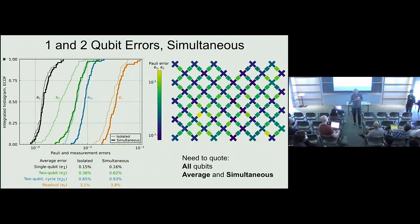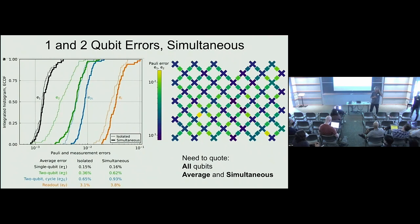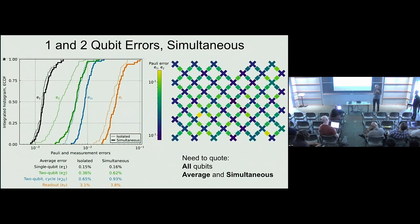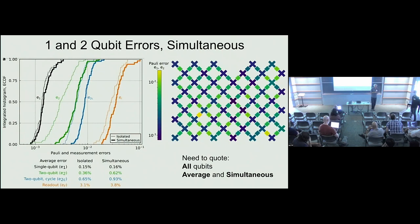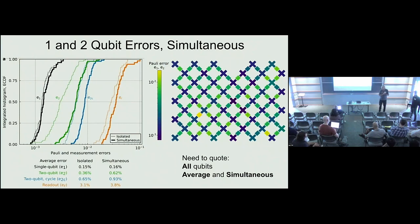Q&A on modular architecture: considering crosstalk between even distant qubits, what would a modular architecture look like for superconducting qubits? The speaker says: crosstalk is a problem across the whole chip, though it's worse for neighboring qubits. One approach is tuning qubits to different frequencies. Ion traps have the challenge that all qubits are identical and therefore all susceptible to mutual crosstalk. This is an issue that has to be engineered and understood better — it can't be ignored.